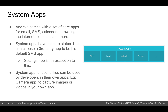What are system apps? System apps are basically those apps that come pre-installed on your phone when you buy it — apps for functionalities like email, SMS, phone calls, camera, etc. System apps have no core status, meaning a user can choose any third-party app to replace the functionality of a system app. For example, you can have a third-party default SMS messenger app. The settings app is an exception to this. System app functionalities can also be used by developers in their own apps — for instance, if you're developing an app involving image or video capture, you can leverage the functionality of the camera app.